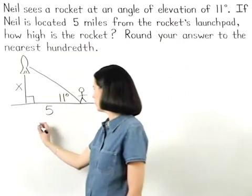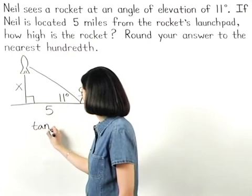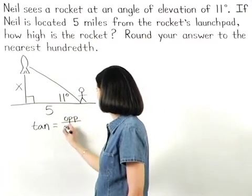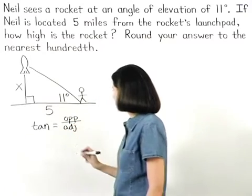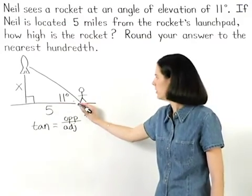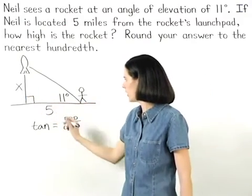And remember that tangent equals opposite over adjacent. So we can set up the equation, the tangent of 11 degrees equals x over 5.